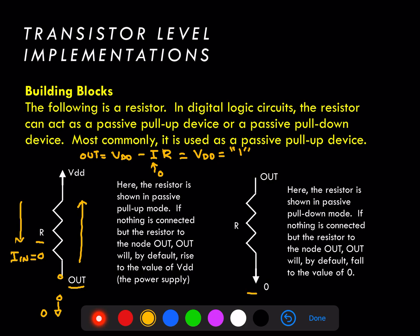On the right we see the resistor shown in pull-down mode. The same basic concept applies: when the output node isn't connected to anything, the current through the resistor is zero, and therefore the output has to have the same voltage as the opposite side of the resistor, or equal to zero volts, and that equals a digital zero. So whether using passive pull-up, active pull-up, or passive pull-down devices, we can make digital circuits using these transistors and resistors to perform the functions discussed in previous sessions.